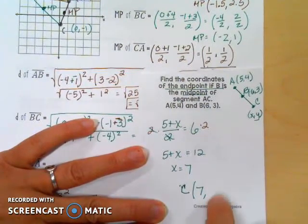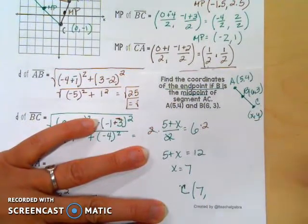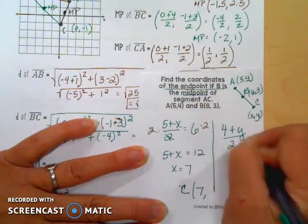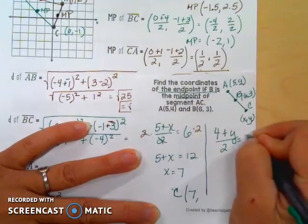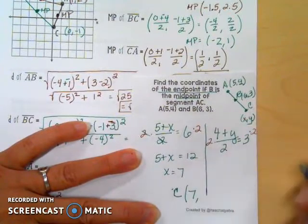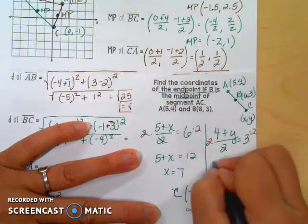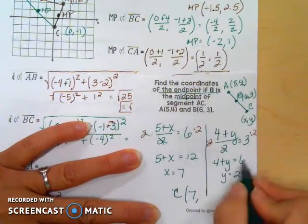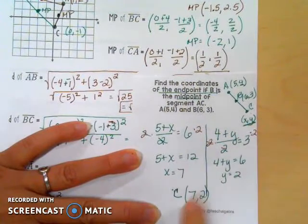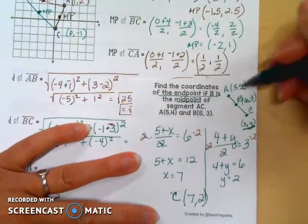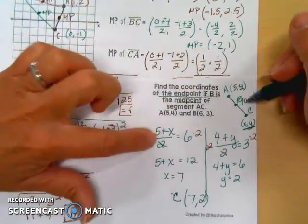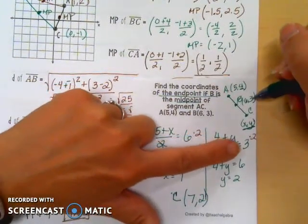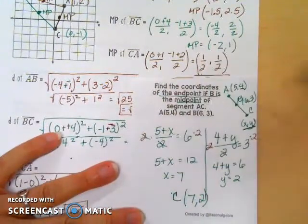Let's find the y part of the endpoint. Taking the y values: 4 plus y divided by 2 has to equal the y value of my midpoint, which is 3. Multiplying both sides by 2, the 2's cancel, giving 4 plus y equals 6. Subtracting 4 gives y equals 2. That means point C is located at (7, 2). We added the endpoints, divided by 2 to get the midpoint, then solved for x and y.